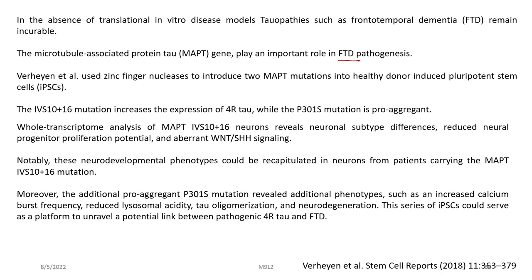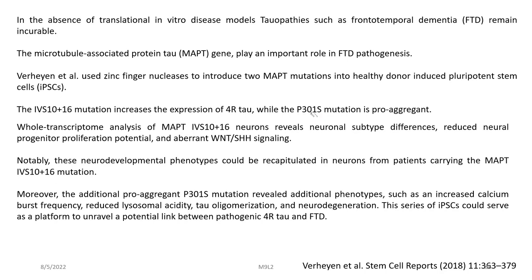Varhajan has used zinc finger nucleases to introduce two MAPT mutations into healthy donor induced pluripotent stem cells: the IVS10+16 mutation, which increases the expression of 4R tau, and the P301S mutation, which is pro-aggregate. Whole transcriptome analysis of MAPT IVS10+16 neurons reveals neuronal subtype differences, reduced neural progenitor proliferation potential, and aberrant WNT/SHH signaling.